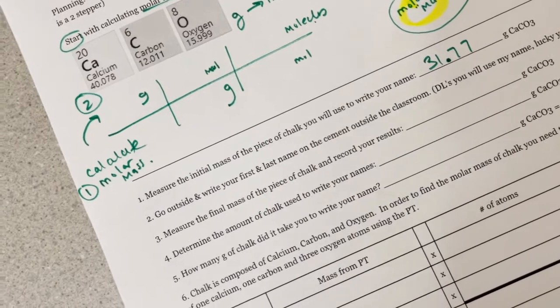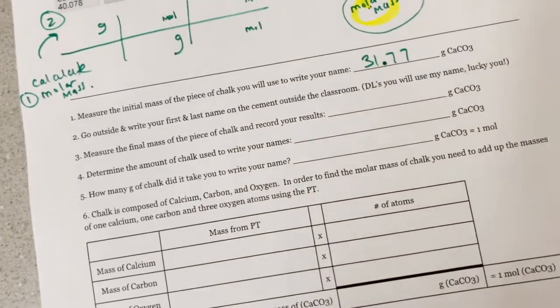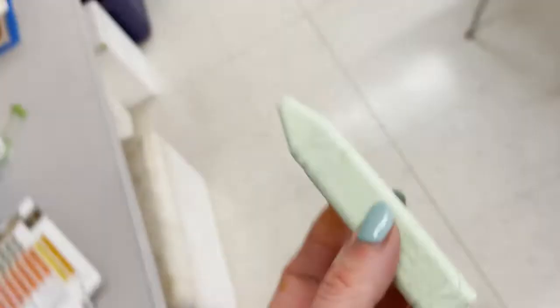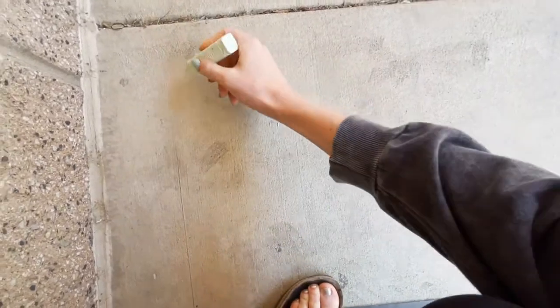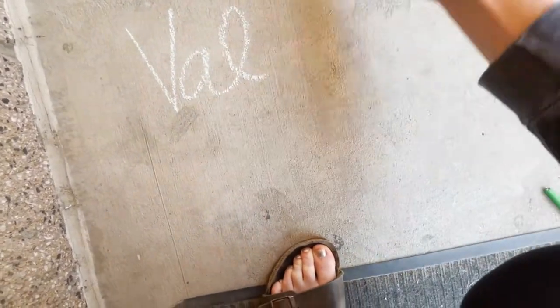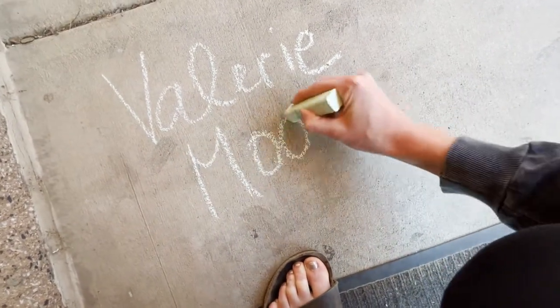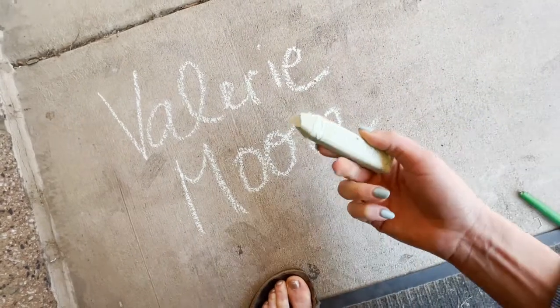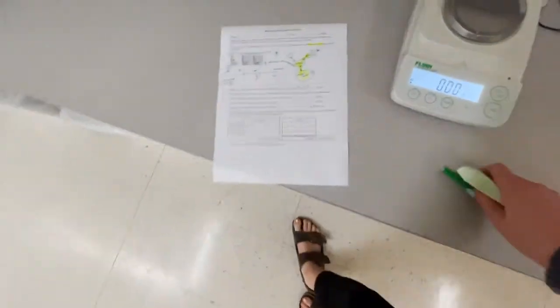Okay, and then it says, go outside and write your first and last name on the cement outside the classroom. Distance learners, you'll use my name. Lucky you. Okay, so here, oh, well, I guess I don't need my paper right now. This is a two-person job, to be honest. Okay, well, let's go ahead and do it right here. Alright, so here we go. Valerie Moore. Okay, so there's definitely, some of it has left it and gone on to the ground. Close that bad boy up. Okay, number two is done.